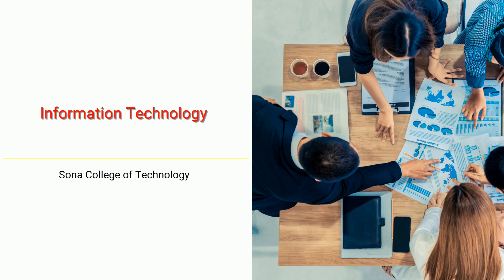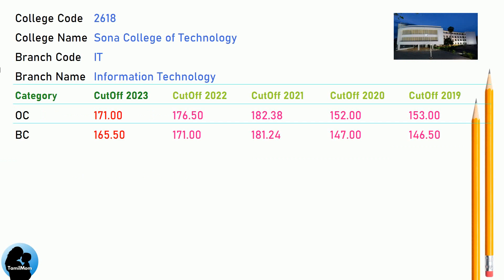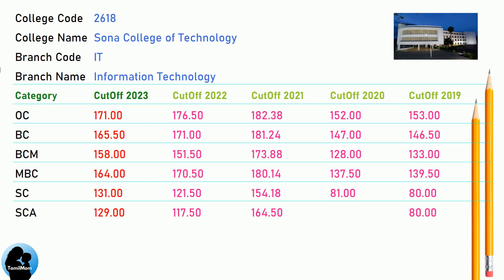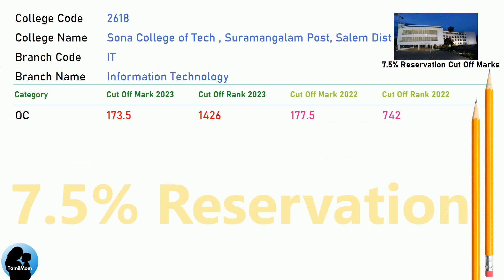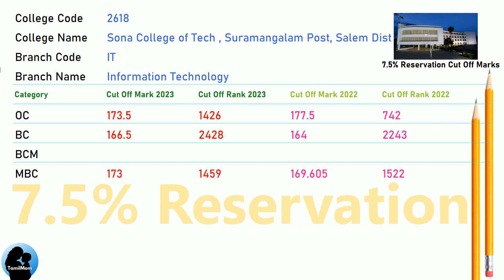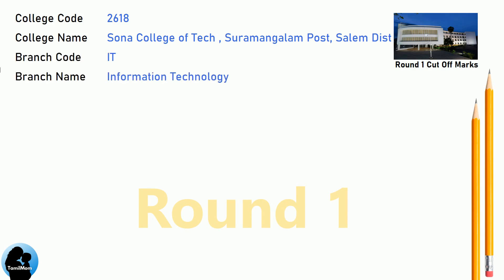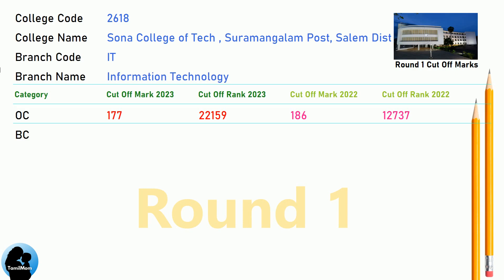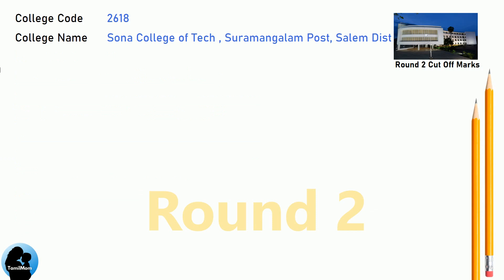DNA cut-off for Sona College of Technology in Information Technology. DNA 7.5 Reservation cut-off for Sona College of Technology in Information Technology. DNA Round 1 cut-off for Sona College of Technology in Information Technology. DNA Round 2 cut-off for Sona College of Technology in Information Technology.